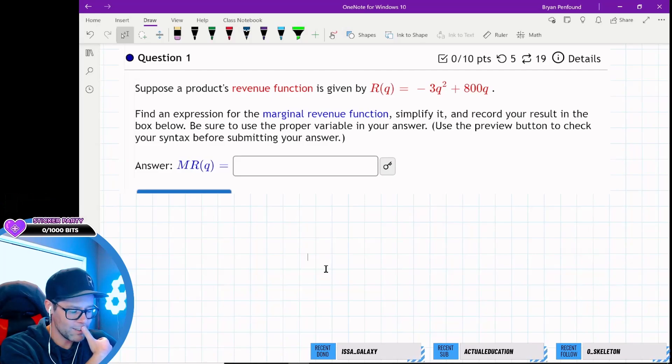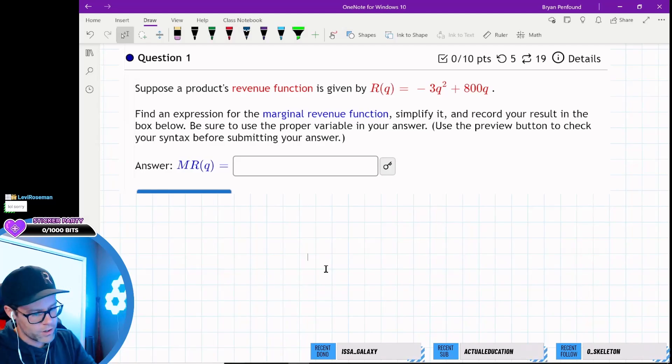Now this looks like it's working with marginal revenue. Okay, so if a product's revenue function is given by negative 3q squared plus 800q, find an expression for the marginal revenue, simplify it, and record your result in the box. Make sure to use the proper variable, right, so we want to make sure to use q.